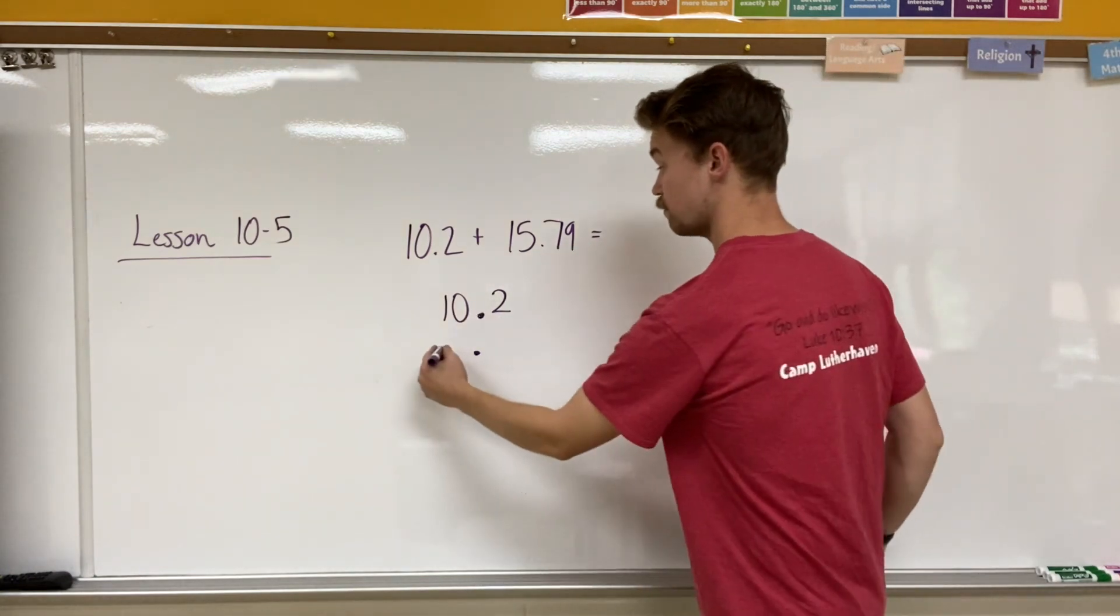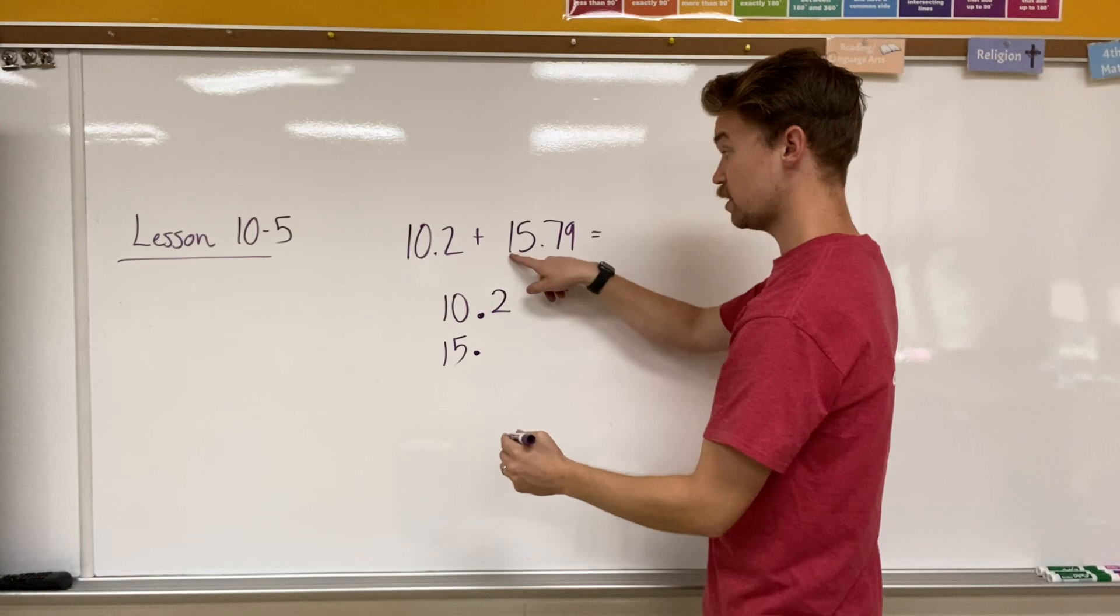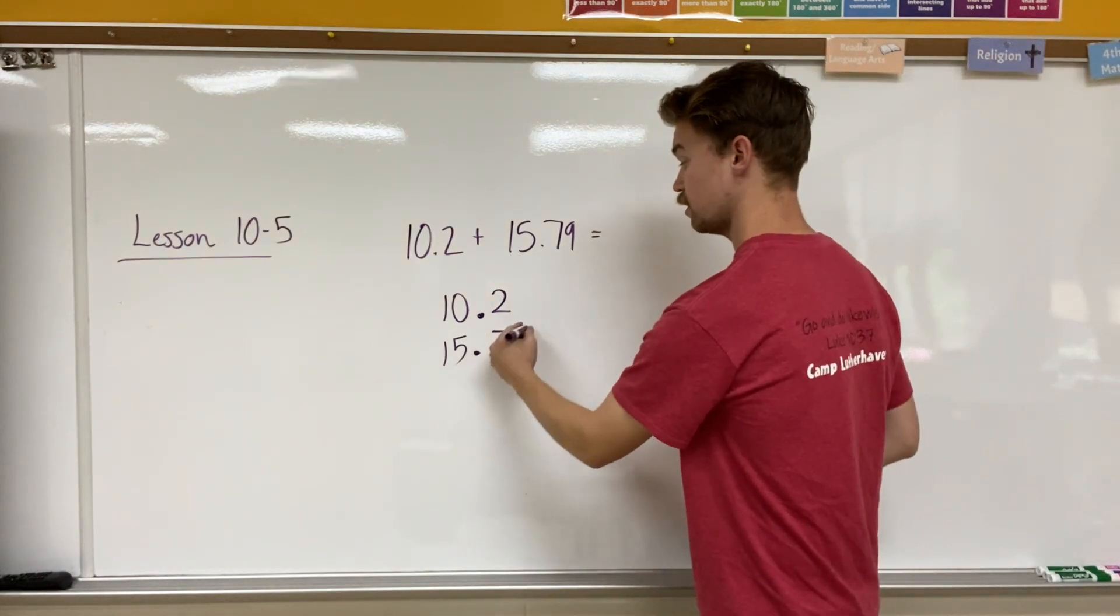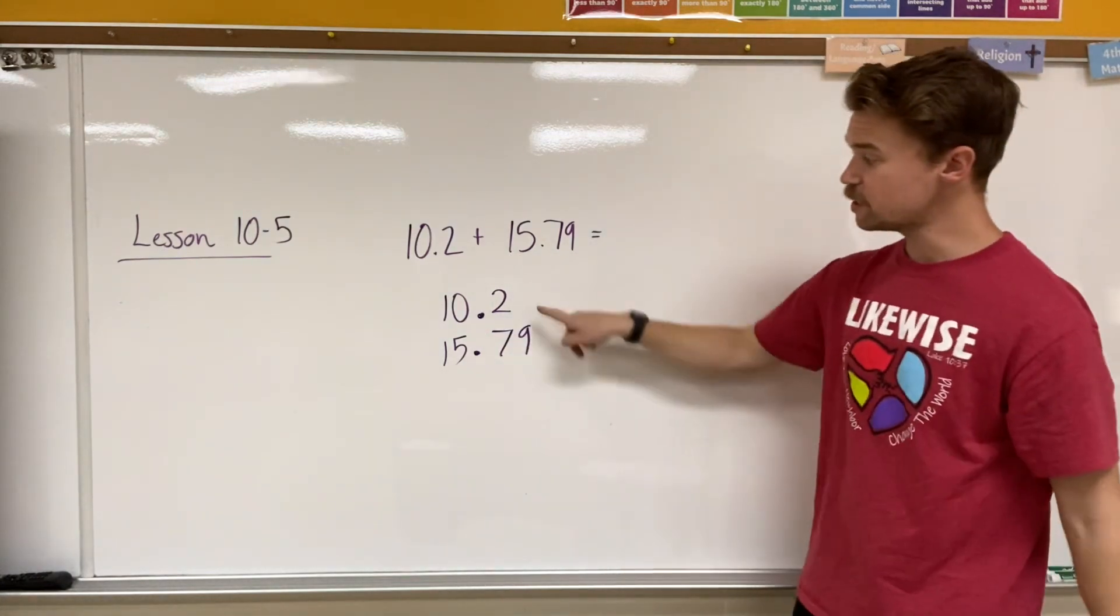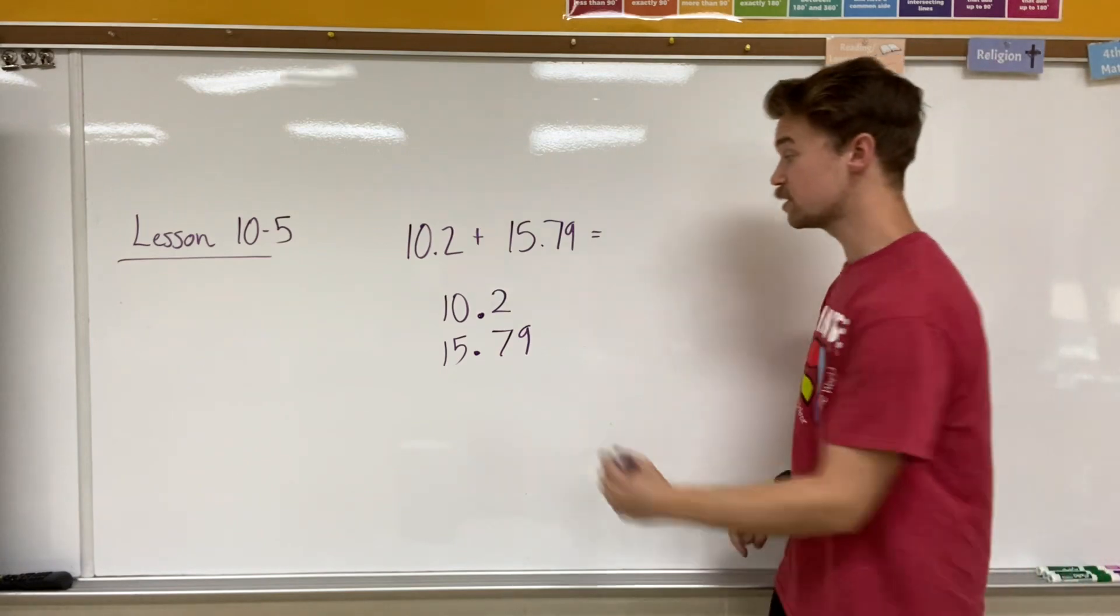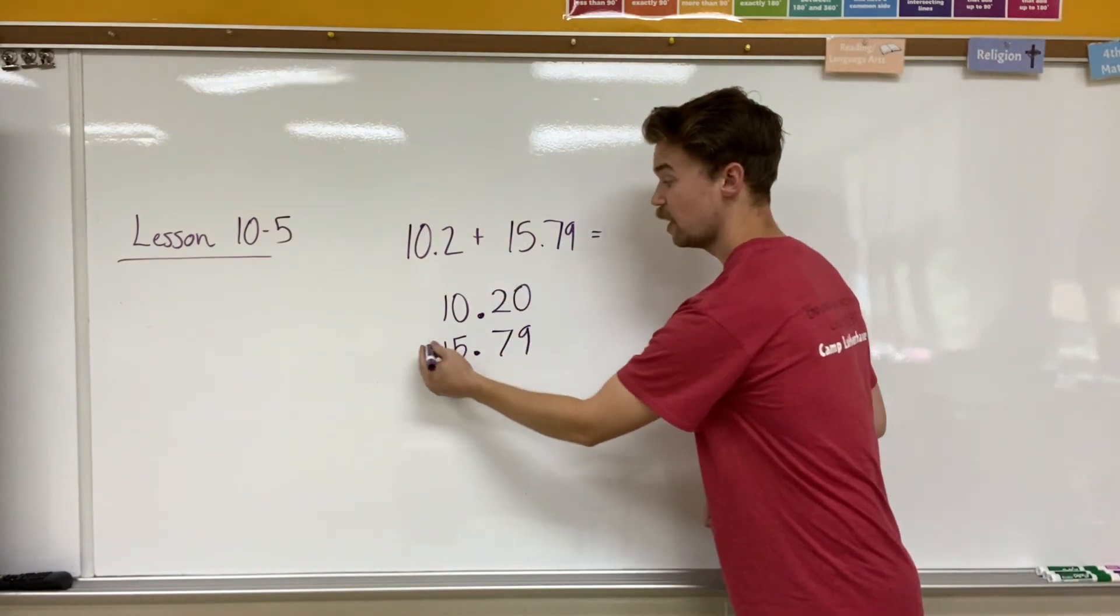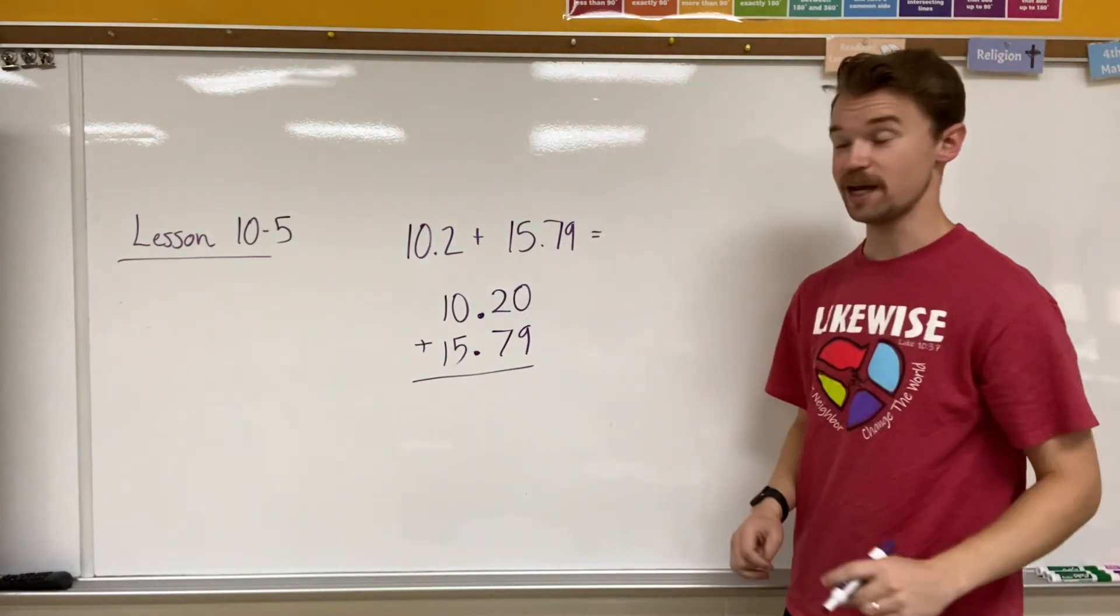15.79. Fifteen is on one side of the decimal place and 79 is on the other side of the decimal place, and I see that I have one place value that is not filled in. I can fill it in with a zero and I can add these together to get my answer.